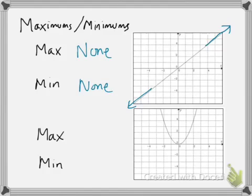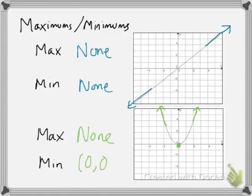In the case of the quadratic function, it doesn't have a maximum because it will continue going upward indefinitely — so it has no max. But it does have a minimum. At the origin, right here at (0,0), the function touches down and comes back up again. That's a minimum.